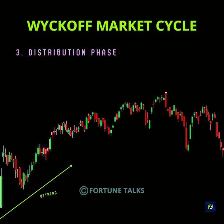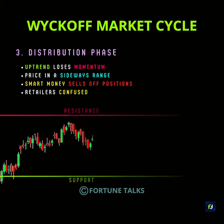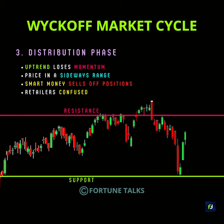3. Distribution phase. Eventually the uptrend phase loses momentum, and prices enter into a distribution phase. It is nothing but another sideways range that takes place after an uptrend. Big players sell the rest of their holdings within the range, and some institutional traders might even short sell in this phase, to profit from falling stock prices.